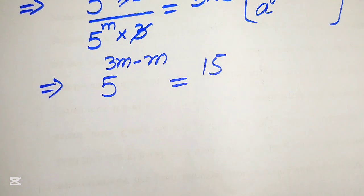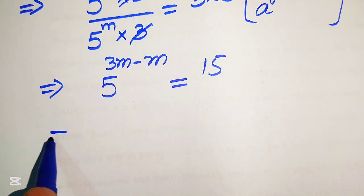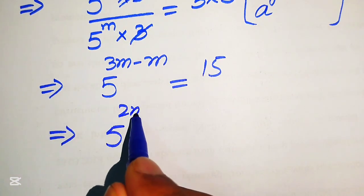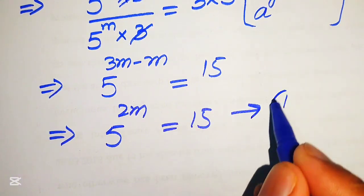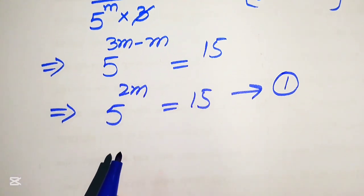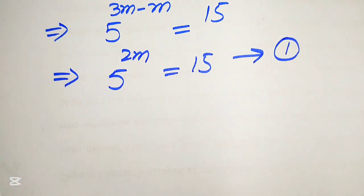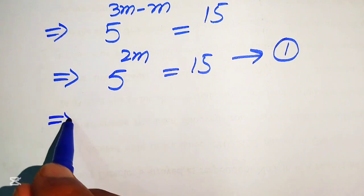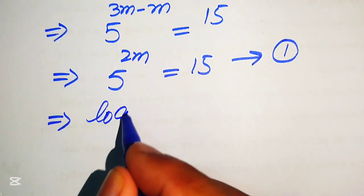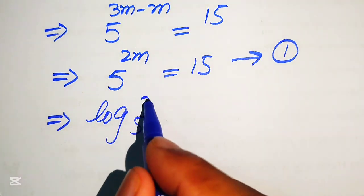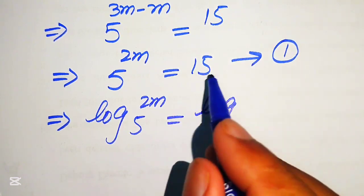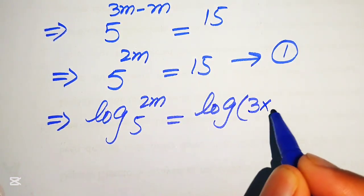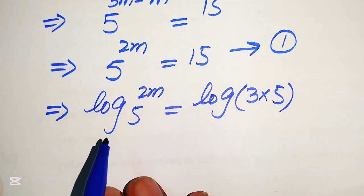We get 5 to the power of 2m equals 15. We call this equation number 1. To find the value of m, we take the log of both sides: log of 5 to the power of 2m equals log of 15, and we write 15 as 3 multiplied by 5.